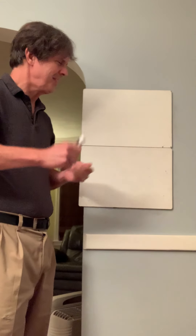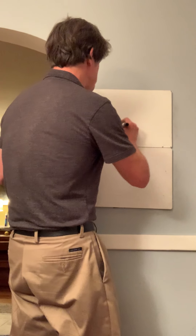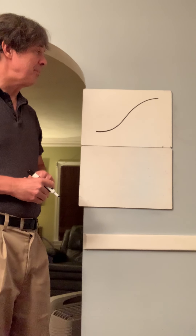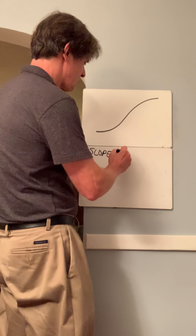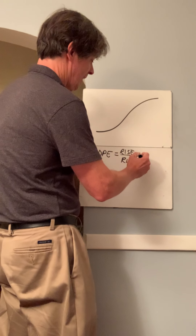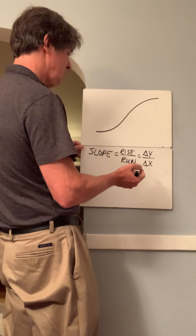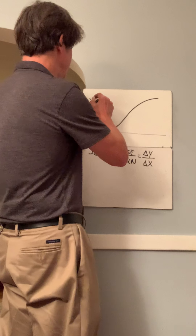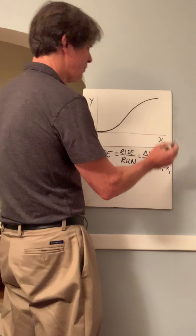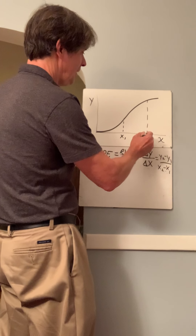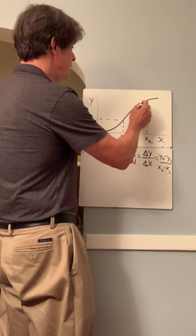I'll start with a hill. I used to coach cross country and track and made the runners run up this hill. The question is: how steep is it? Steepness is generally called slope, and you know what slope is — it's rise over run, delta y over delta x. You can also call this y2 minus y1 over x2 minus x1, because differences are differences between points.